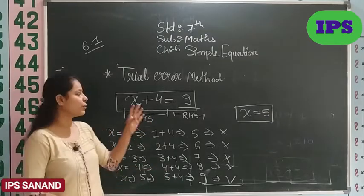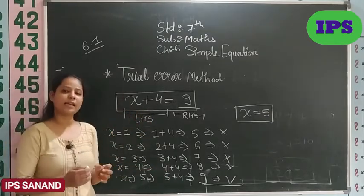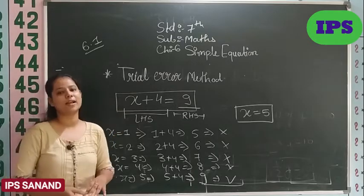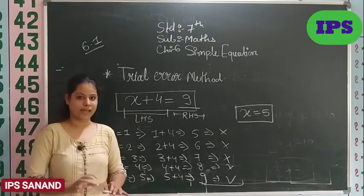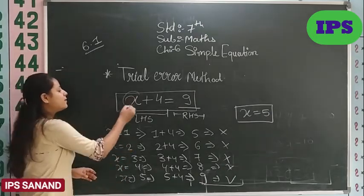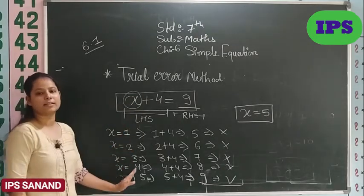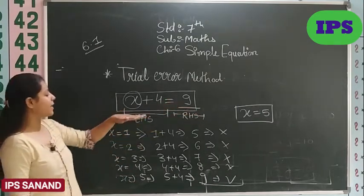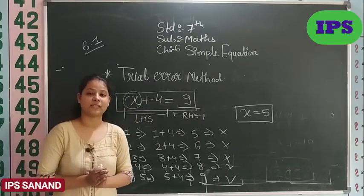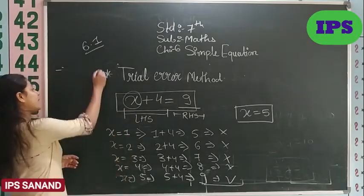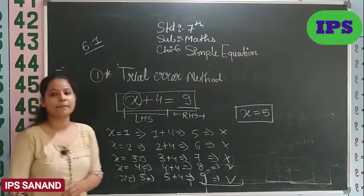x as 4. 4 plus 4 will give me 8, but not 9. So, it is also not possible. Now, x equals to 5. Will you keep doing this? How long will you do this? x equals to 5. Now, will we have to do so much? This much for finding 5. So, there are other methods also. Because of the long process, trial error method is not used much. Because, this process is quite lengthy. So, just for your knowledge, I have told you the trial error method.